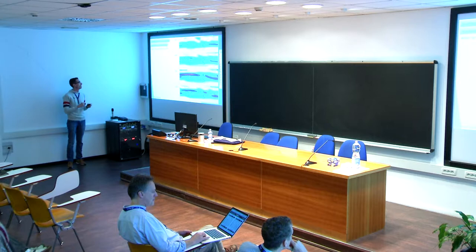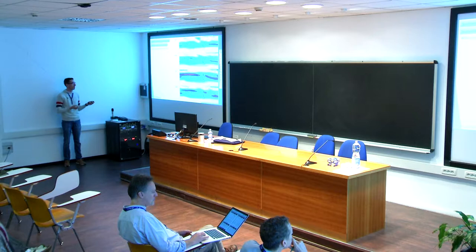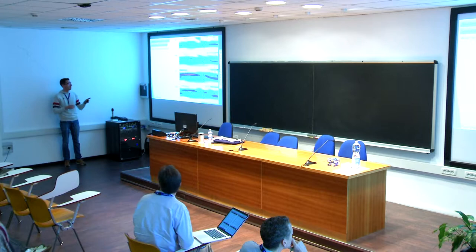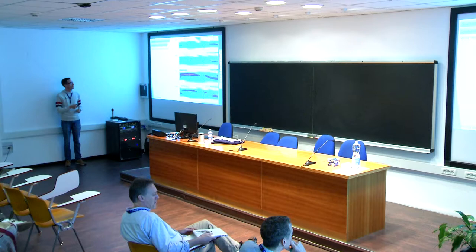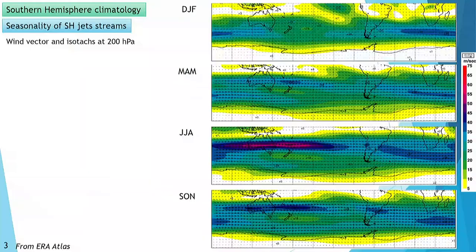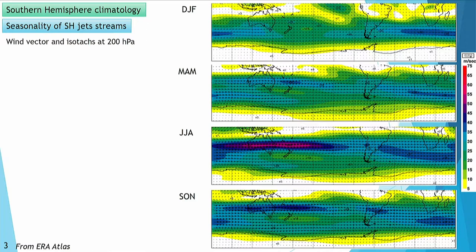One of the things I wanted to point out before we start was the seasonality of the Southern Hemisphere jet streams. This is from the ERA Atlas, taken from the 200-hectopascal level. During Southern Hemisphere summer (DJF), we get this subpolar jet stream, mostly over the Southern Atlantic and South Indian oceans. Moving towards Southern Hemisphere winter, we also get this very intensive tropical jet, mostly covering the Southern Indian Ocean, Australia, and the Eastern Pacific Ocean. We also get this subpolar wave drain, and the splitting of the wave drains in this region is very important for analyzing the propagation of Rossby wave trains.